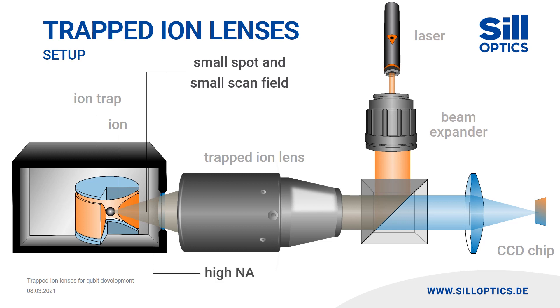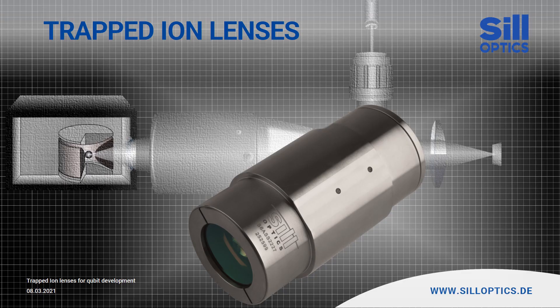Another important issue for the optical design is the vacuum chamber where the pole trap is located. The vacuum window limits the distance between the focal plane and the lens to a minimum value. No laboratory setup for trapped ions is identical to another. The thickness and material of the vacuum window vary, but so does the distance to the focal plane and even the type of trapped ions. Thus, the necessary wavelength for observation and irradiation vary, and custom solutions are usually necessary for trapped ion lenses.